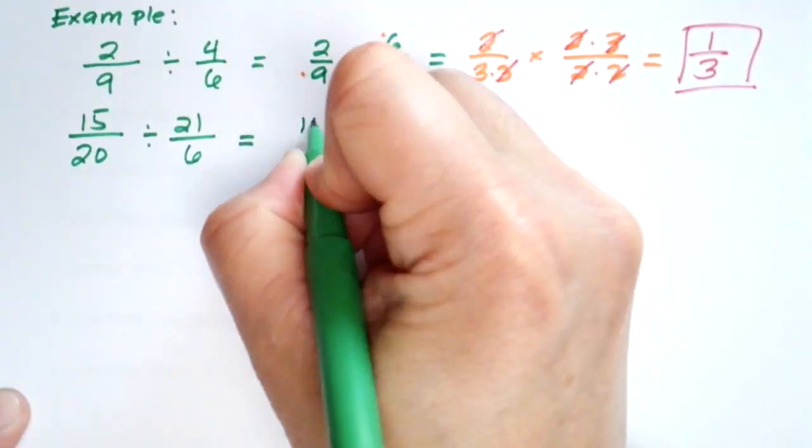Similarly, if we have 15 over 20 divided by 21 over 6 using the same technique.